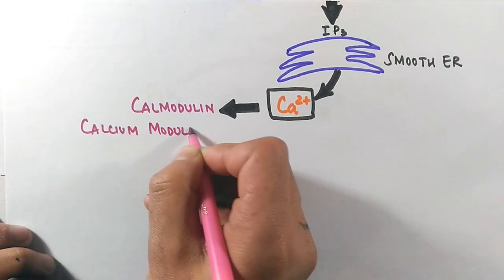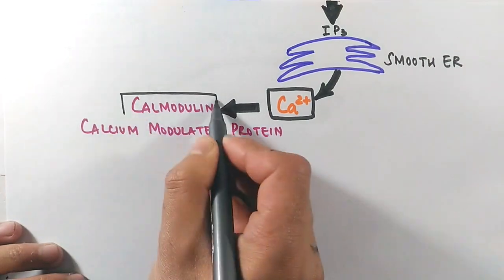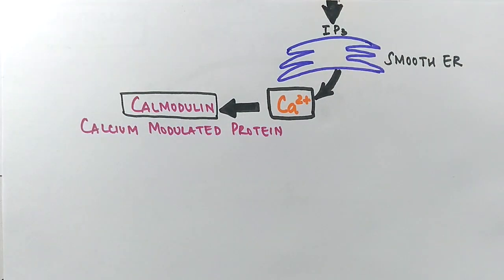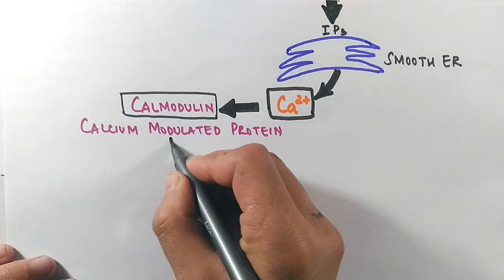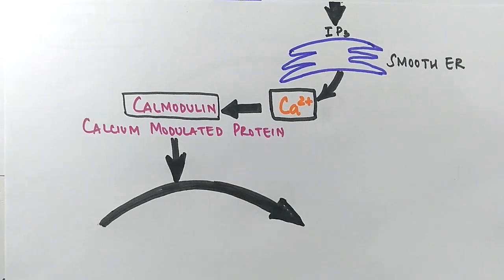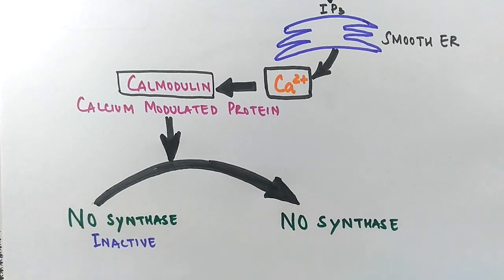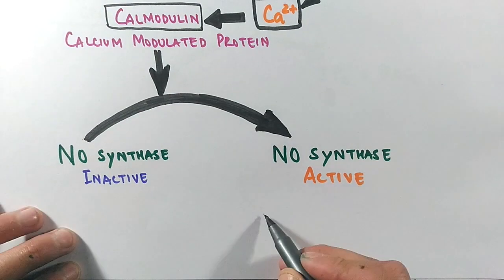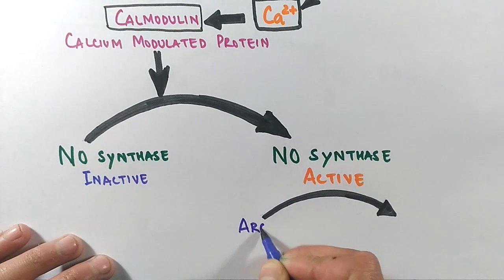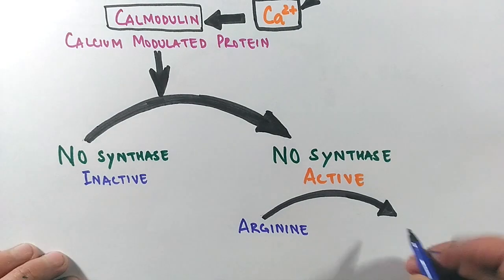That's why it's called calcium modulated protein - because it gets activated by calcium ions only. This calmodulin has the property to activate nitric oxide synthase, and in turn this synthase synthesizes the nitric oxide from arginine in endothelial cells.